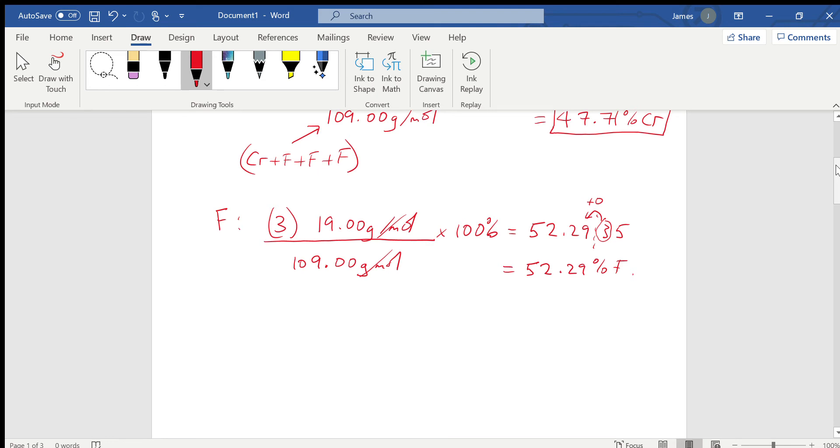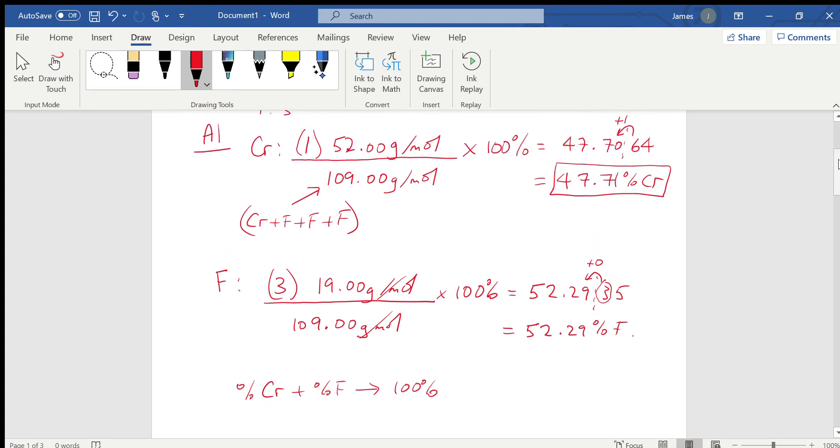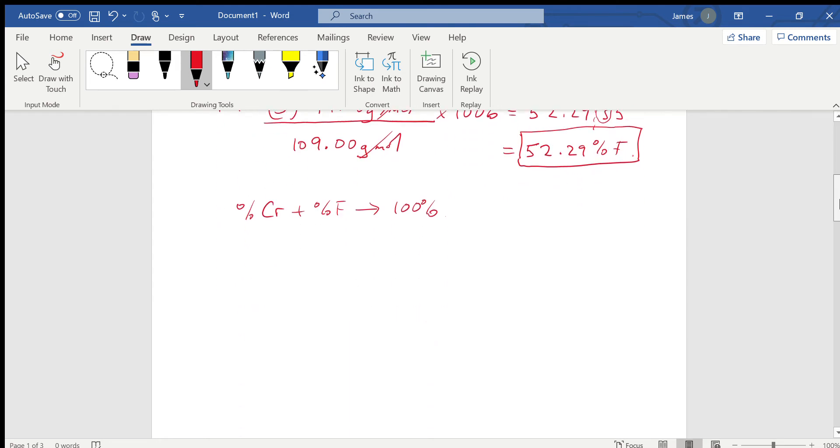Within rounding error, the percent chromium plus the percent fluorine in this case should give a hundred percent. We can see that indeed 52.29 and 47.71 percent does give us a hundred percent total. So these are our two answers for that question.